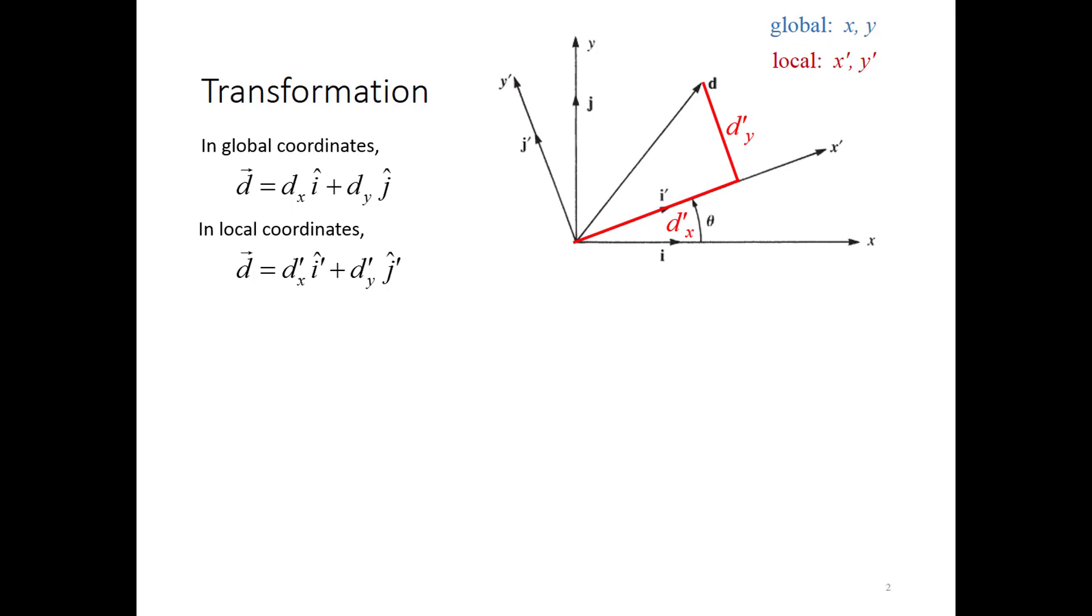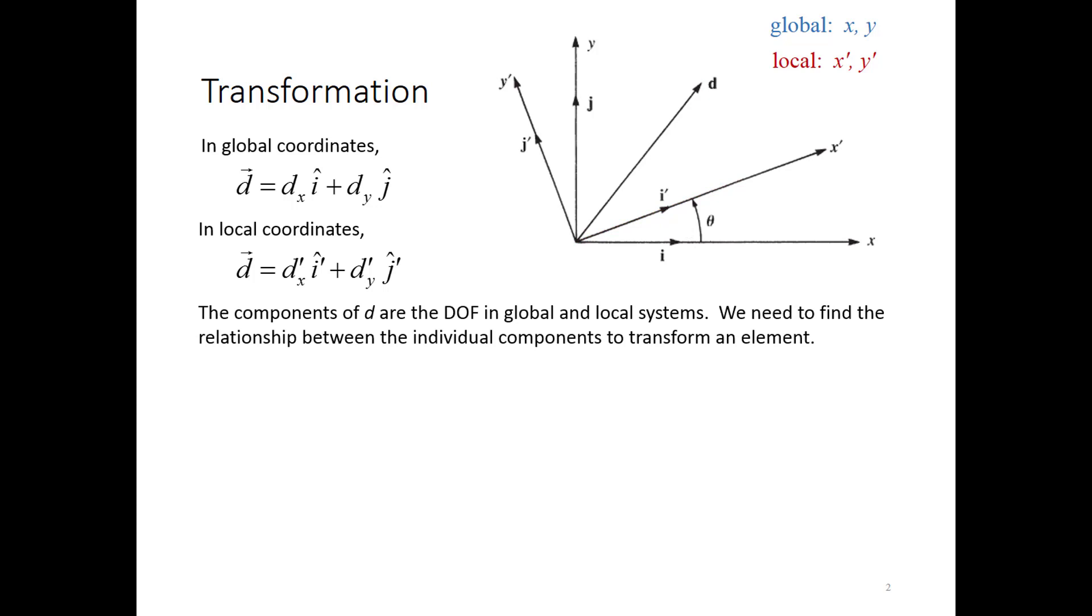Recognize that these two vectors D are just one vector. It can be written in two different ways. The components of D are the degrees of freedom that we're referring to when we look at the element. So in the local coordinate system, the translational degree of freedom along the axis of the bar is dx'. That's going to get converted to a dx and a dy in the global system.